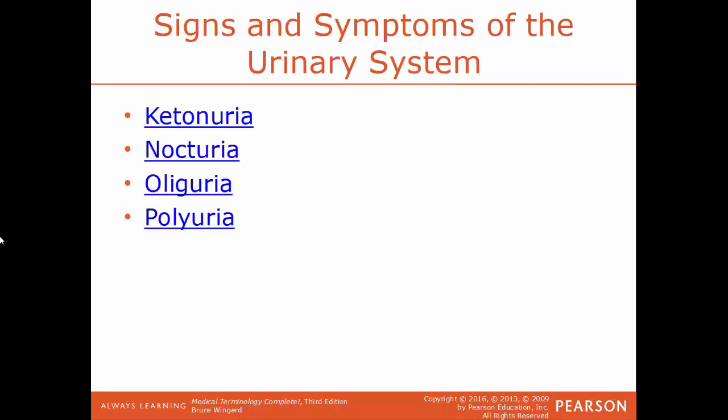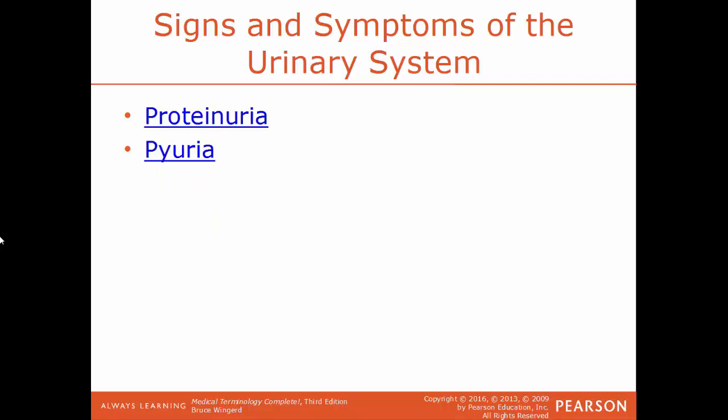Nocturia is a condition where the person feels the need to wake up and urinate at night. Oliguria is the production of very small amounts of urine, and the opposite would be polyuria — the production of an abnormally large volume of urine, resulting in very dilute urine. Proteinuria is the presence of proteins in urine. Pyuria is the presence of pus within urine, most likely due to a bacterial infection.